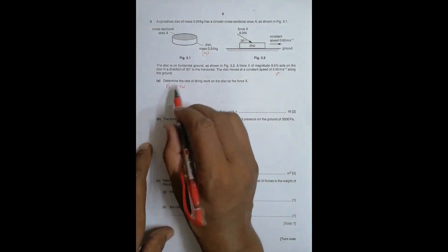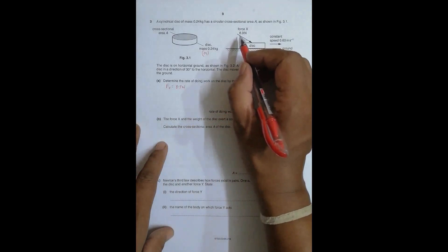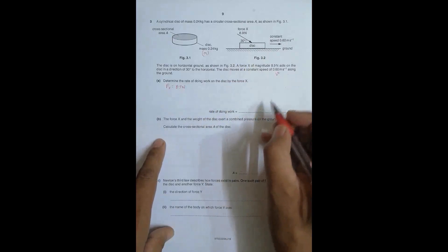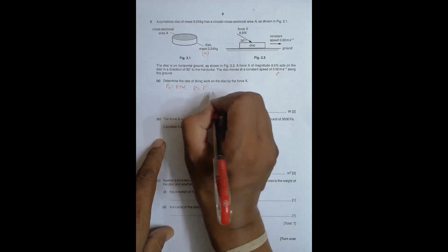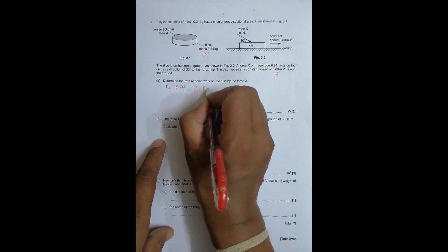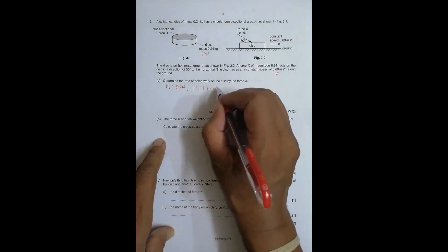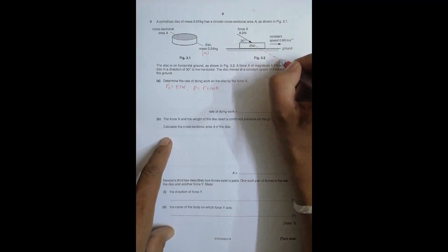Now we need to find the rate of doing work on the disk by force X. To find the rate or power, the formula is: Power = F × velocity × cos θ. This θ should be the angle formed between the directions of F and S. I have to produce this thing here, so the angle between this force and this displacement S is θ, which is vertically opposite to this, so it equals 30 degrees.